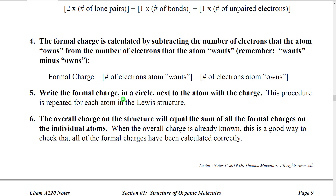We then write the formal charge in a circle next to the atom. In organic chemistry, when we write charges on atoms inside of a larger structure, we generally write those charges in a circle to indicate that they are a formal charge of the atom, not the overall charge of the entire species. The overall charge on the structure will be the sum of all the formal charges on the individual atoms. This means we can have structures that have formal charges inside but the formal charges balance out and the overall structure is not an ion. This is also a really good way to check your work — if you think you have a neutral atom and the formal charges add up to something non-zero, you've probably made a mistake.